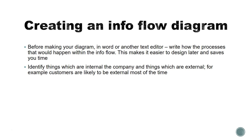You also need to identify things which are internal within the company — things that as a company you'll have total control over — and then things which are external, which they won't have so much control over. For example, a customer. You can pretty much assume that customers are going to be external for these purposes. Also things like banks — very few shops and businesses process their own transactions; most of them will go through a bank. There will be security systems set up and they will be an external source.